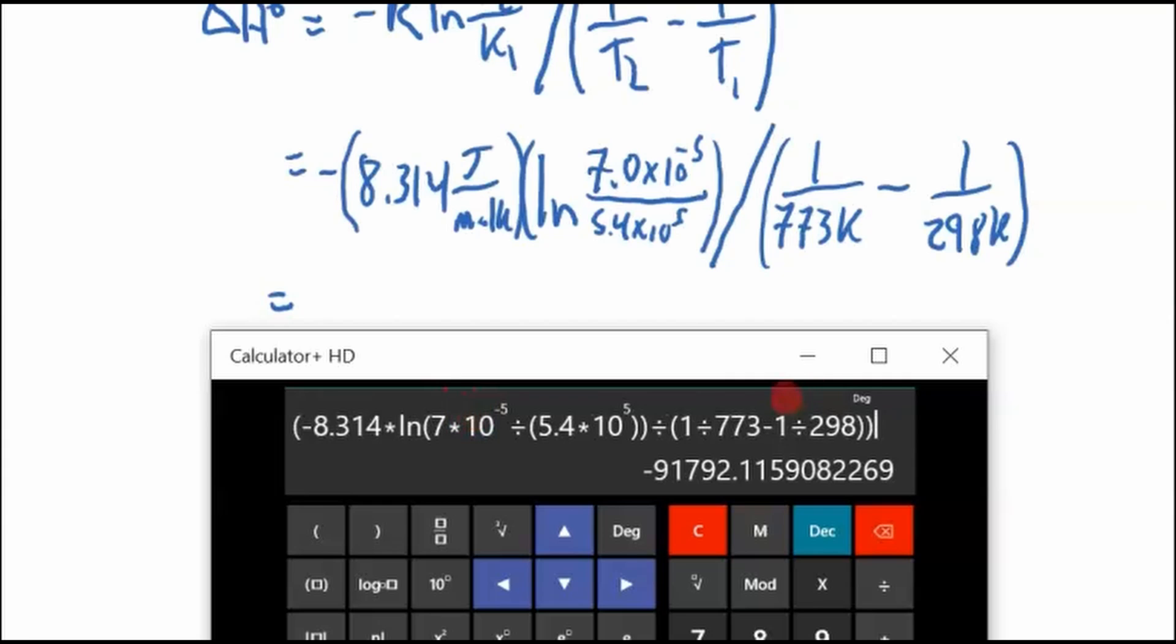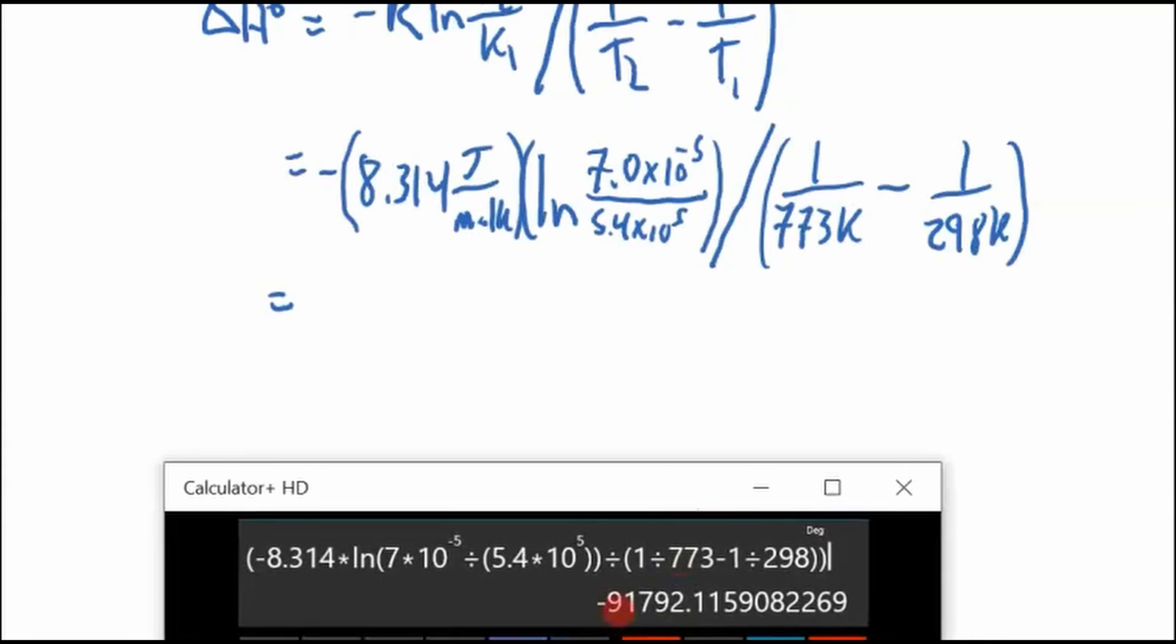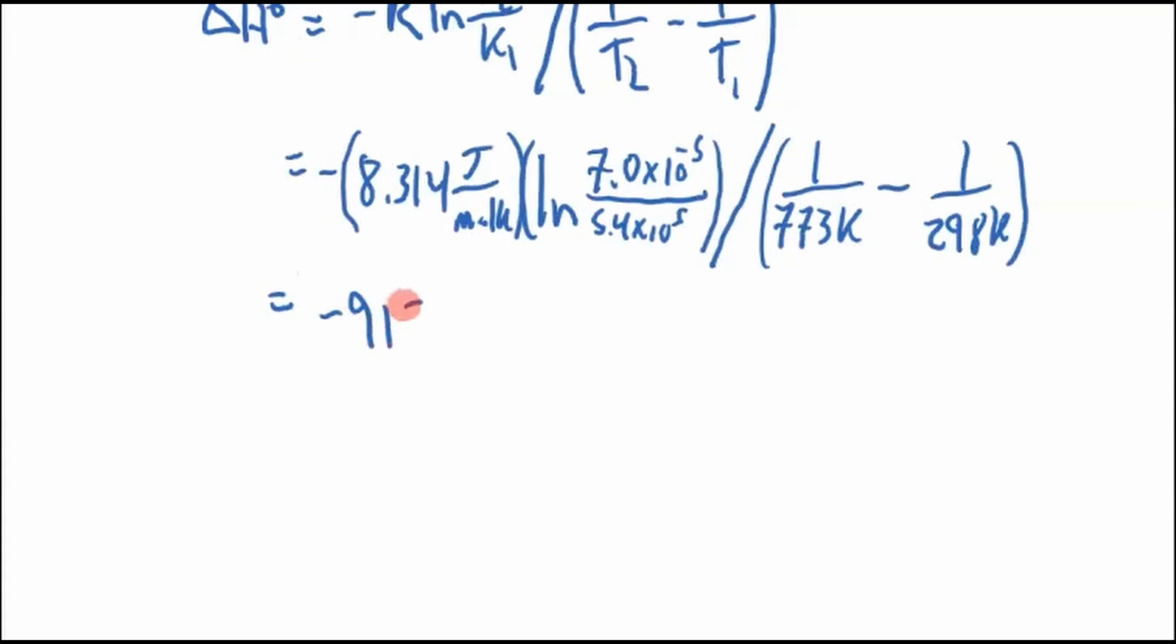Let's see what it says. Negative number, so it's exothermic. Negative 91792. So negative 91792. I don't think I did this on the last problem, but we want to cross out our units. This is divided by 1 over Kelvin, which cancels with this Kelvin here, and we're left with joules per mole. That's basically our answer. We usually report these enthalpies in kilojoules, so we'll multiply by 1000.